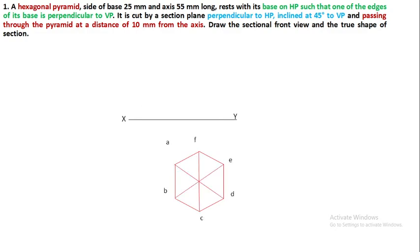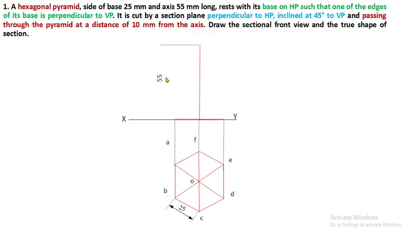Complete the slant edges OA, OB, OC, OD — since OD is entirely visible — and extend the projectors from the top view. The axis height is 55 mm. The long slant edges OC and OF on the axis can be drawn by means of continuous thin lines.